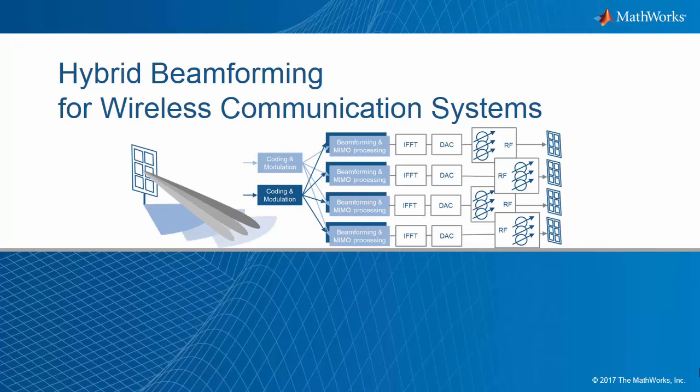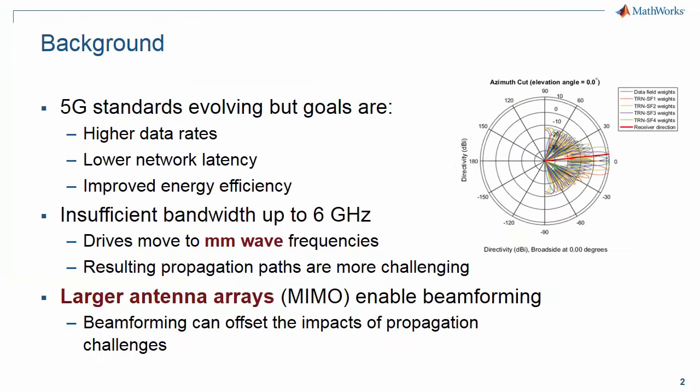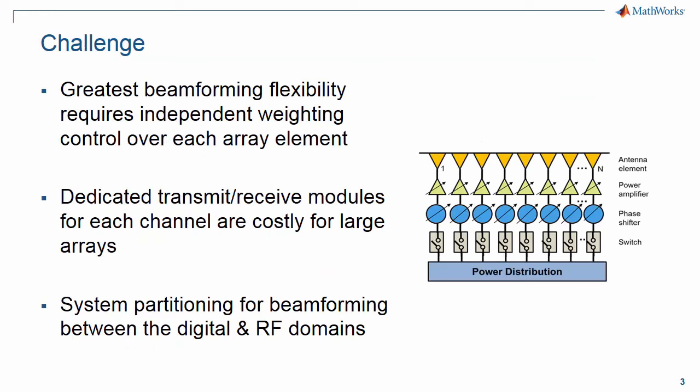This video introduces hybrid beamforming for wireless communication systems in MATLAB. As 5G standards evolve, the goals are clear: higher data rates, lower network latency, improved energy efficiency. We have insufficient bandwidth up through 6 GHz and this really drives the need to move to millimeter wave frequencies. Now the resulting propagation paths are much more challenging. Large antenna arrays enable beamforming and this beamforming can offset the impacts of the propagation challenges. The greatest beamforming flexibility requires independent weighting control over each element, but these dedicated transmit and receive modules for each channel are costly for large arrays. System partitioning for beamforming between the digital and RF domains is called hybrid beamforming and this is what we'll go through today.